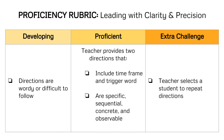This proficiency rubric details how your learning will be assessed. During your 10-minute mini-lesson, you'll need to give at least two directions. One of the directions will need to include a time frame and a trigger word. The directions you give must be specific, sequential, concrete, and observable. For that extra challenge, check students' understanding by selecting a student to repeat the directions.